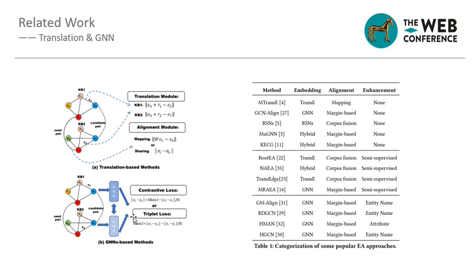The second type is graph neural network based, inspired by Siamese neural networks, which are widely used in computer vision. A typical architecture of GNN-based methods consists of two multi-layer graph neural networks with contrastive loss or triplet loss. In addition, entity alignment methods can also be divided into three categories depending on the information they use.